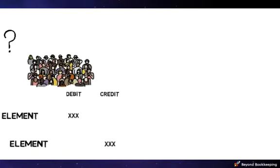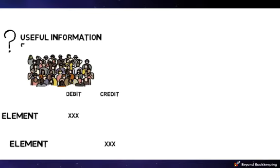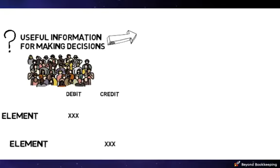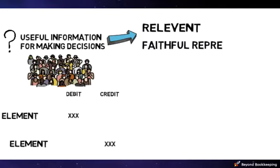At this point you have made a lot of decisions in speaking accounting. You have made choices about which element, you have determined if the recognition criteria have been met, and you have made choices about the measurement base. All of these choices should be grounded in the purpose of accounting — to provide stakeholders with useful information in making decisions about the reporting entity.